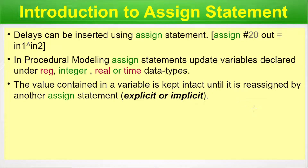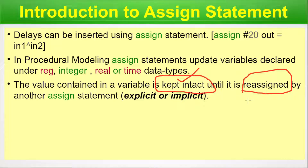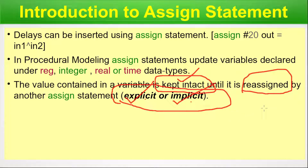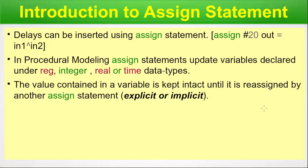The value contained in a variable is kept intact until it is reassigned by another assign statement. Once we assign a value, it will be kept intact until the next occurrence of reassignment. There could be a combination of explicit or implicit assignments — the first explicit, and then implicit inside a procedure. Whatever value we have assigned, it will be kept intact and will change only at the next reassignment.